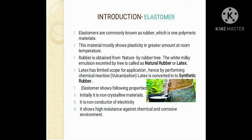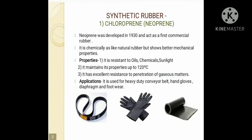The first synthetic rubber is chloroprene, or neoprene. Neoprene was developed in 1930 around the time of the first World War, and it acts as the first commercial synthetic rubber. It is chemically similar to natural rubber but shows better mechanical properties than natural rubber.